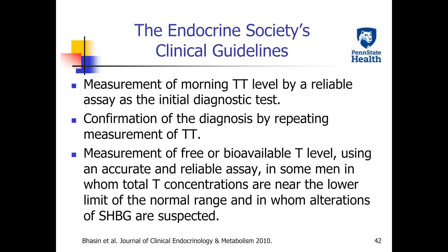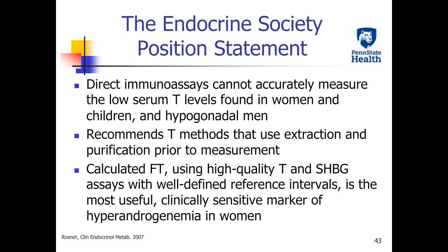Several professional organizations have developed guidelines to address how to select testing approaches. In 2010, the Endocrine Society published a clinical guideline for testosterone therapy in men with androgen deficiency syndromes. It recommends a morning total testosterone test using a reliable method as the initial test. If it is abnormal, repeat the test to confirm. If a result is close to the lower limit of the reference range, free or bioavailable testosterone should be measured to rule out low sex hormone binding globulin.